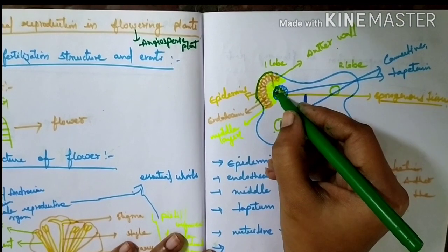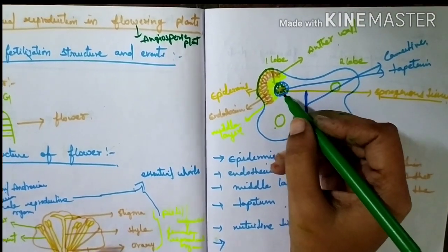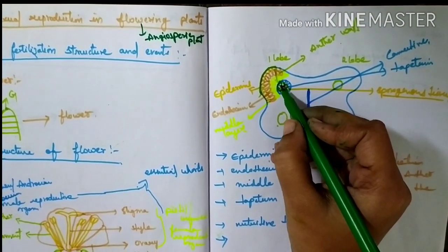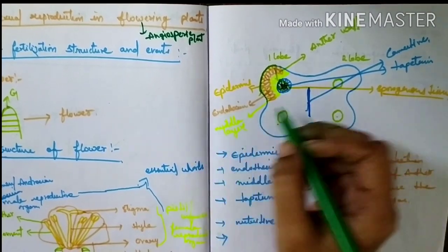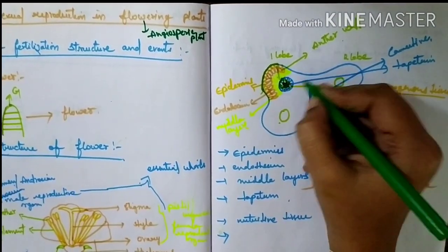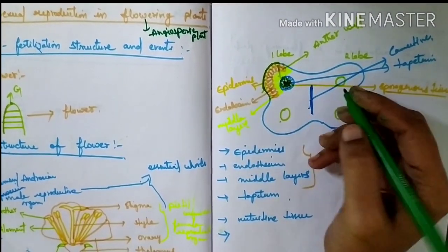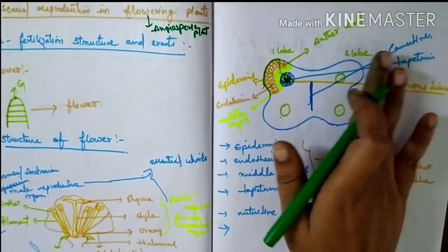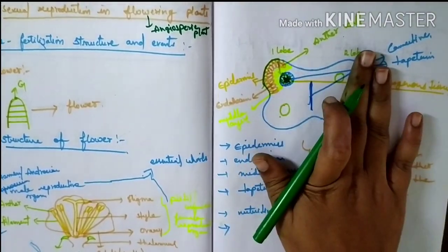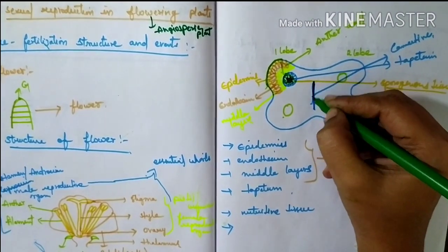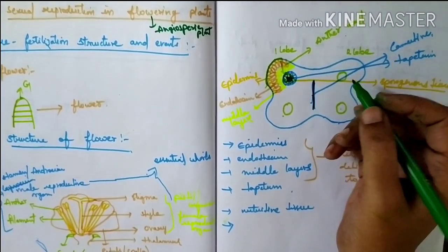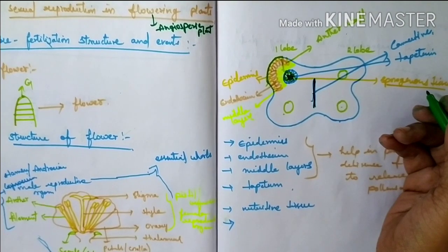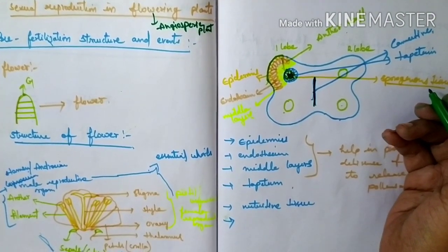Inside the microsporangia, the compactly arranged cells at the center are called sporogenous cells. At the two lobes of the anther, the structure connecting them is called the connective. It is sterile because it does not take part in sexual reproduction.